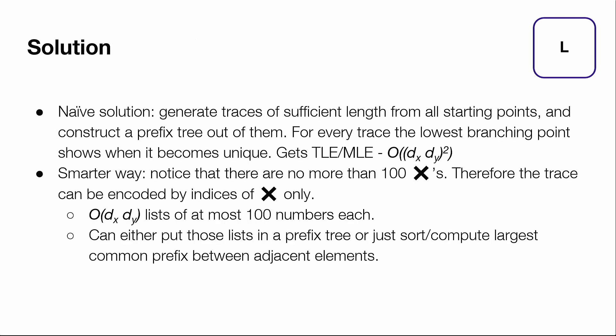There is an obvious naive solution which is to generate all the traces covering the whole grid from every possible starting point and then construct a prefix tree out of them. Then it's quite easy to determine the length of the prefix which is sufficient for positioning.